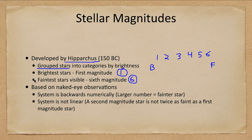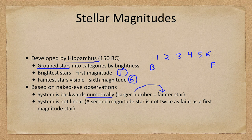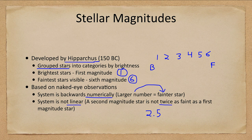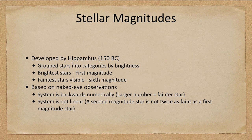This system is backwards from what we're used to — numerically backwards, meaning a larger number is a fainter star. That's different from most other measurements: with temperatures, a higher number means something is hotter; with distances, a larger number means something is farther away. Also, the system is not linear. A second magnitude star is not twice as faint as a first magnitude star — it's about two and a half times fainter. This is similar to the Richter scale for earthquake intensities, where each small increment in the number makes a very large difference in the actual intensity.